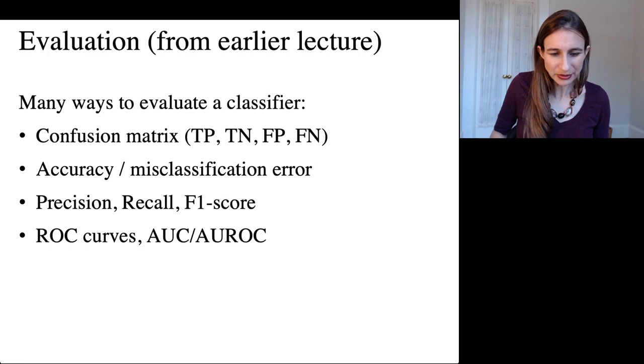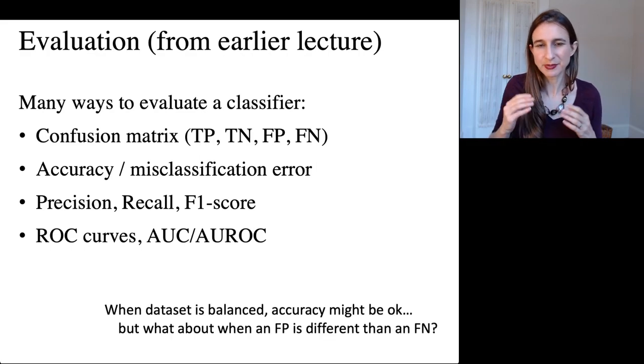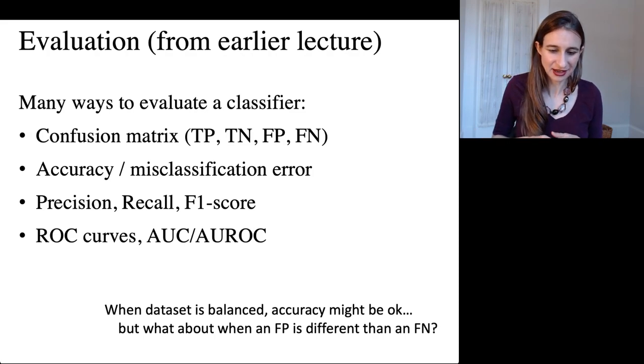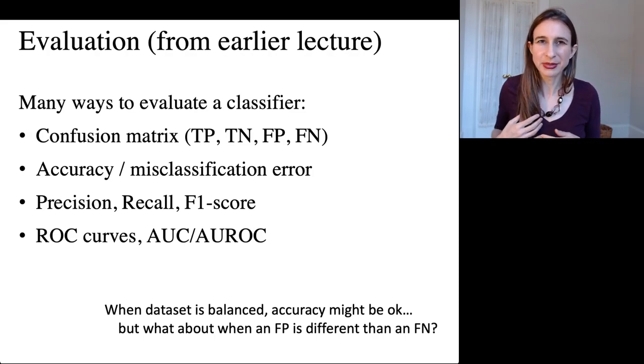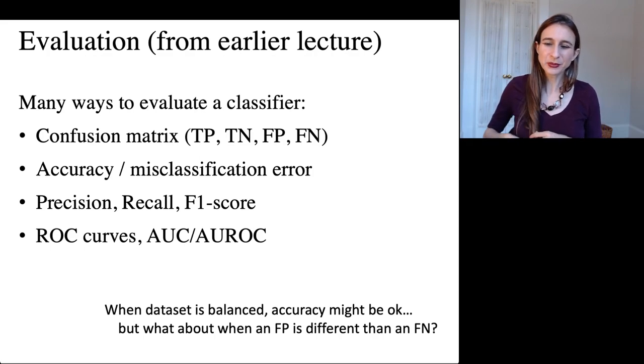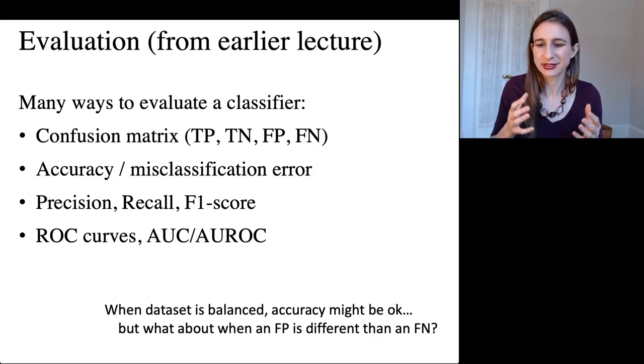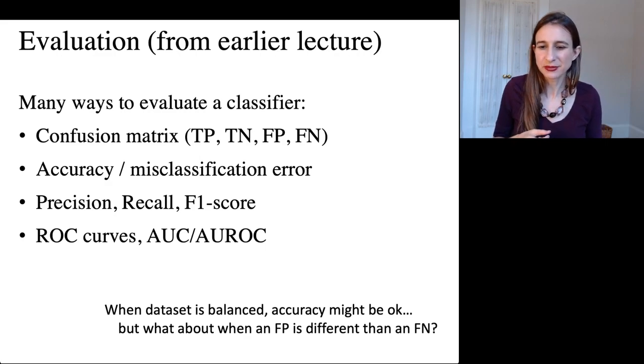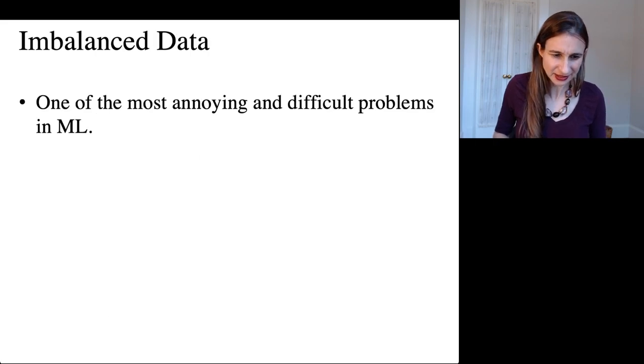And I want to point out that when a data set is balanced, like if you have the same number of positives and negatives in the data set, then accuracy might be a good evaluation measure to use. But what if you have a very imbalanced data set? Or what if having a false positive is really bad compared to having a false negative? So I want to talk about what happens in that case.